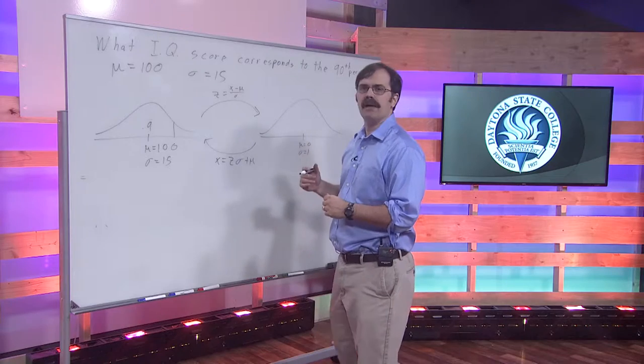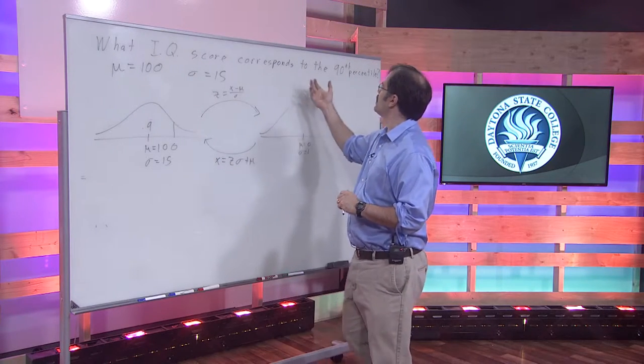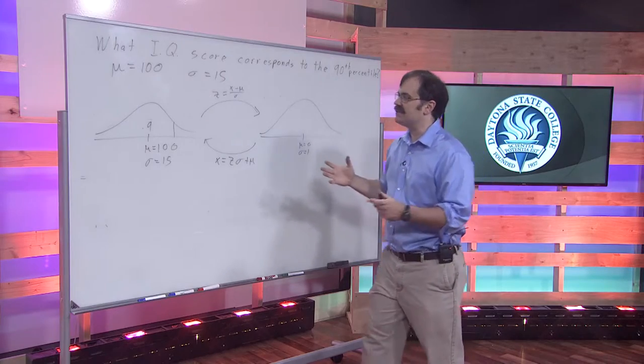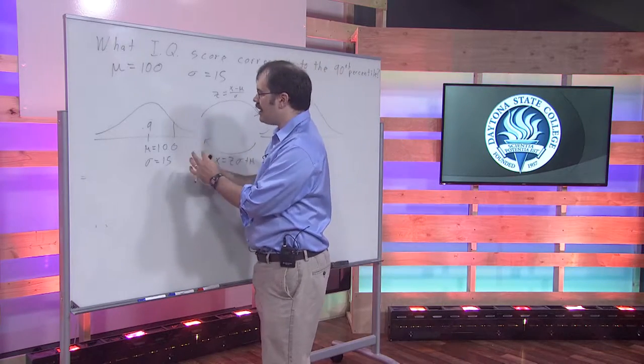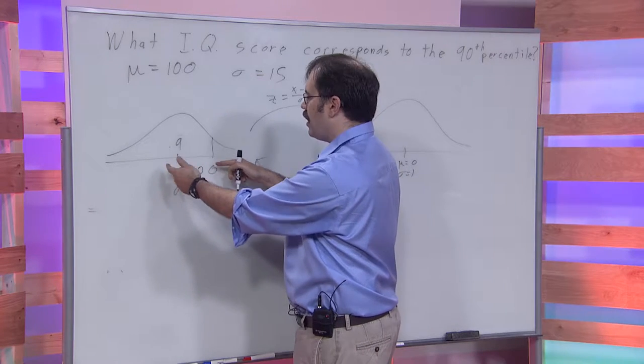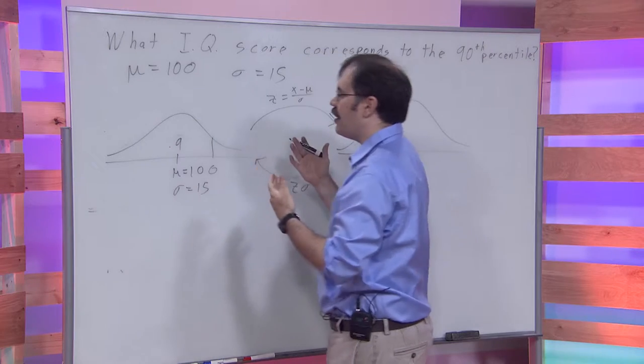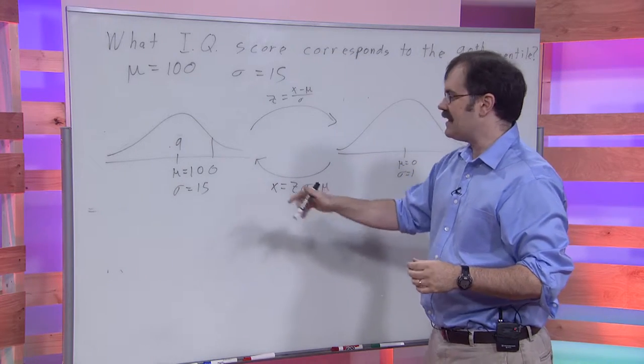So now let's look at a different type of problem with these IQ scores. What IQ score corresponds to the 90th percentile? So what we're saying is we want an IQ score over here that has 90% of the scores that are equal to or less than that value.